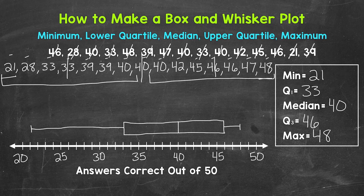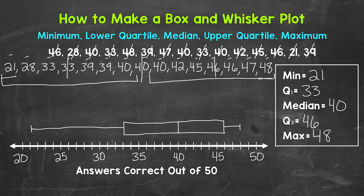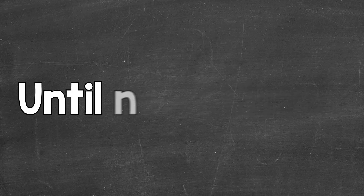And that's our final box and whisker plot. We have the minimum, the first quartile, the median, the third quartile, and the maximum represented. One thing you can do if you are drawing out a box and whisker plot by hand is use a ruler to make the lines a little straighter. So there you have it — that's how to create a box and whisker plot. I hope that helped. Thanks so much for watching. Until next time, peace.